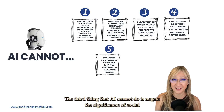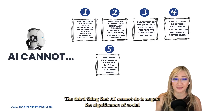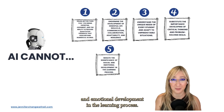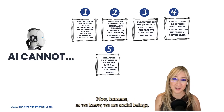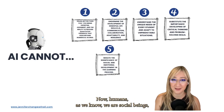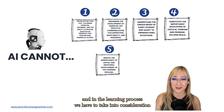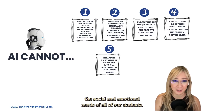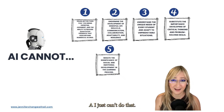AI cannot negate the significance of social and emotional development in the learning process. Humans, as we know, are social beings, and in the learning process we have to take into consideration the social and emotional needs of all of our students. AI just can't do that.